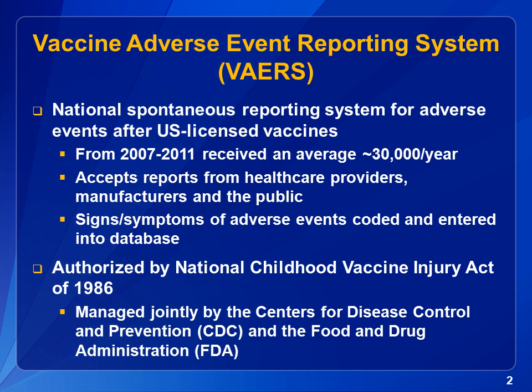VAERS is a national system that accepts reports of adverse events, or health problems, that occur after vaccines licensed for use in the United States are administered. VAERS receives approximately 30,000 reports each year and accepts reports from anyone, including doctors, nurses, pharmacists, and other health care providers, vaccine manufacturers, and patients or parents. When a report is received, the illness, signs, and symptoms, or adverse event, is assigned a code and entered into a database. VAERS data are searched based on the assigned codes.